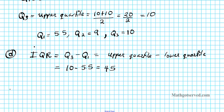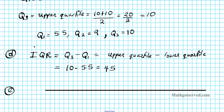Alright, option E — now we're going to make a box and whisker plot of this data set. We're going to draw a number line going from 1 all the way to 11 and then graph the box and whisker plot.